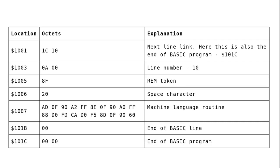Here it's 101C, so that points to the next line in the BASIC program. However, we're only entering one line here, so further down that's the end of the BASIC program. Then at location 1003 we have our line number — 0A is line number 10.